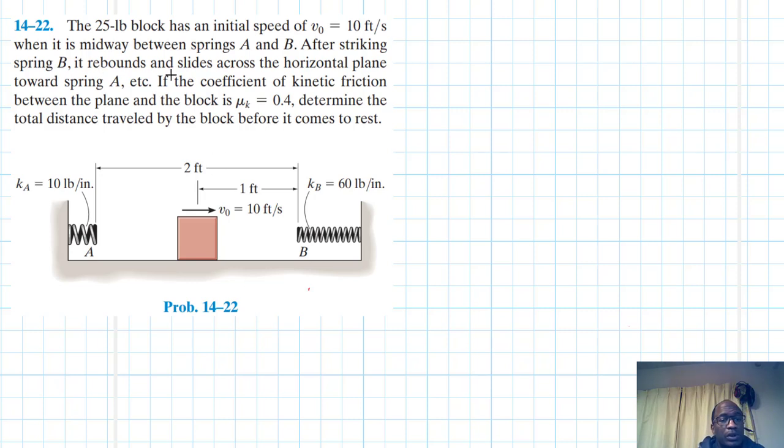Hello, I welcome you all to this another interesting screencast. In this problem we have the 25 pounds block and it has an initial speed of 10 feet per second when it is midway between springs A and B. After striking spring B, the block rebounds and slides across the horizontal plane towards spring A. If the coefficient of kinetic friction between the plane and the block is 0.4, determine the total distance traveled by the block before it comes to rest.